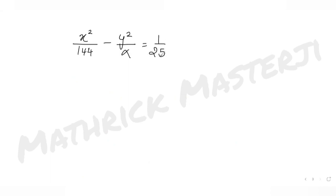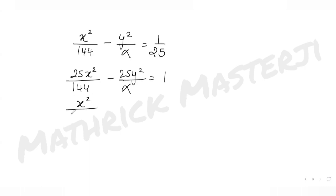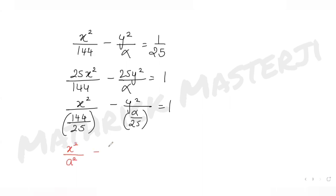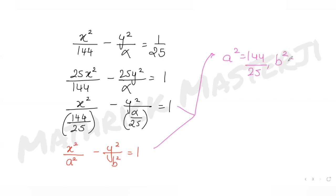For the hyperbola, the equation is x² over 144 minus y² over alpha equals 1 over 25. Multiplying through by 25 gives 25x² over 144 minus 25y² over alpha equals 1, which simplifies to x² over (144/25) minus y² over (alpha/25) equals 1. Comparing with the standard form x² over a² minus y² over b² equals 1, I get a² = 144/25 and b² = alpha/25. The eccentricity of the hyperbola is √(1 + b²/a²).